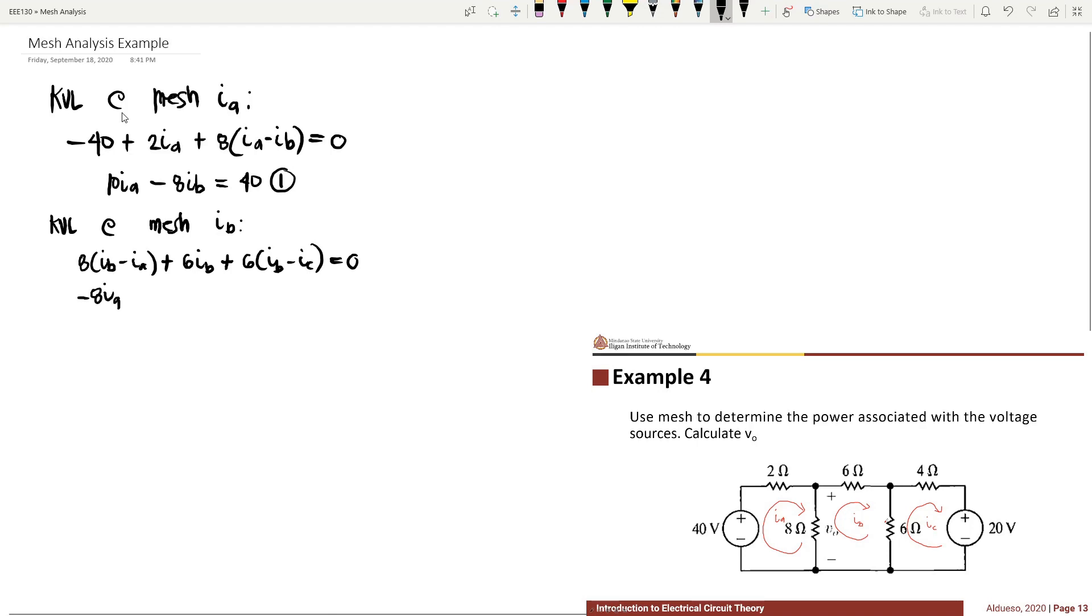This gives us negative 8 times Ia plus 14 times Ib minus 6 times Ic equal to zero. This is equation 2.